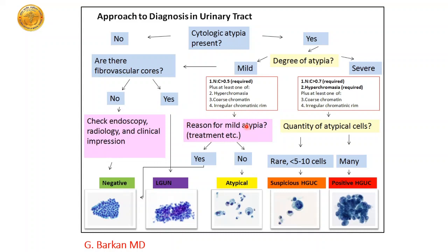They have summarized all these categories: first see whether cytologic atypia is present; if so, what is the degree? Is it mild or moderate to severe? Then go on to the N:C ratio by eyeballing. See whether minor criteria are present — hyperchromasia, nuclear contour irregularity, coarse chromatin. If mild atypia with a reason (lithiasis, viral cytopathic effect, treatment-related) call it Negative for High Grade Urothelial Carcinoma. If no reason for mild atypia, call it AUC. When there is severe atypia, quantity matters: if fewer than 5 to 10 abnormal cells, call it Suspicious for High Grade Urothelial Carcinoma; if more than 10 cells with abnormality, call it positive for High Grade Urothelial Cancer.